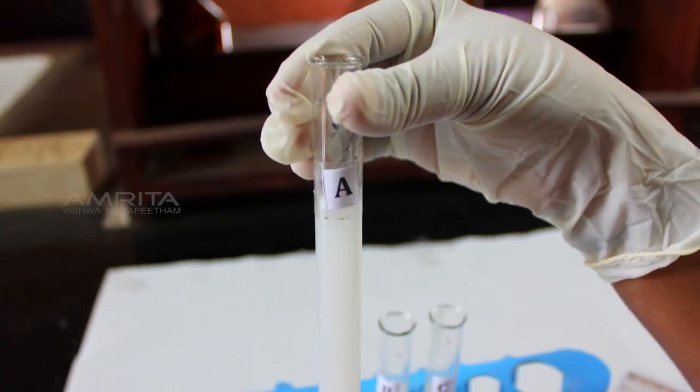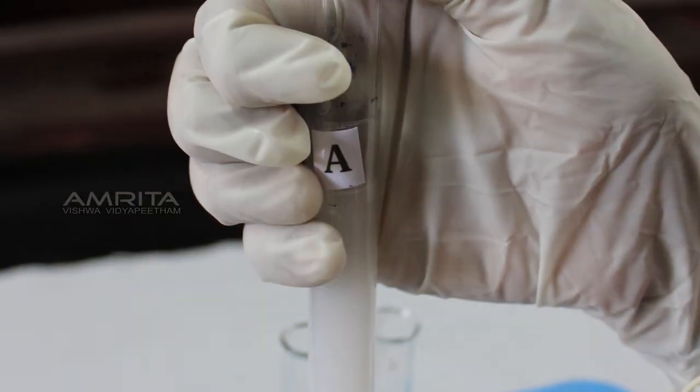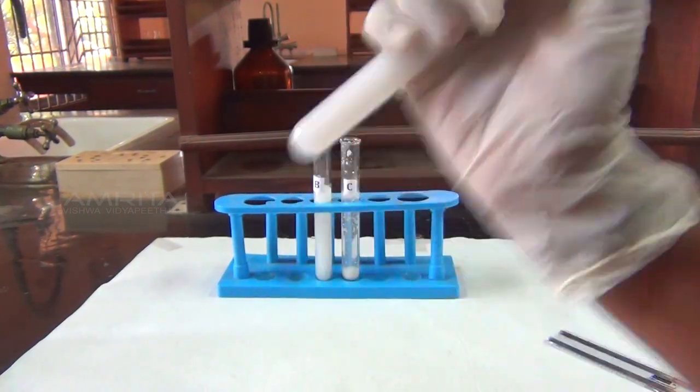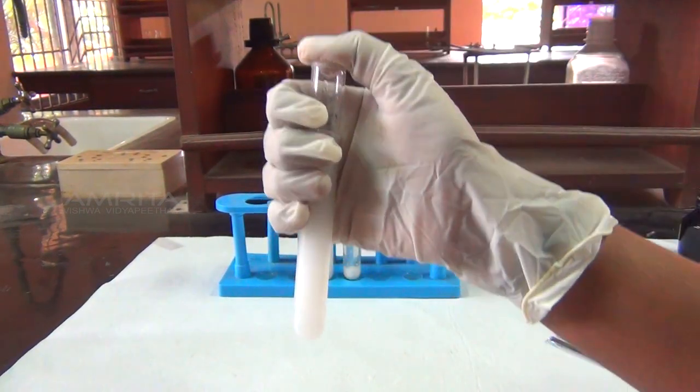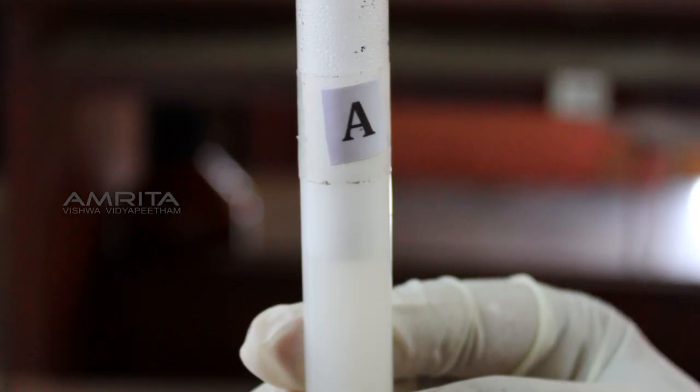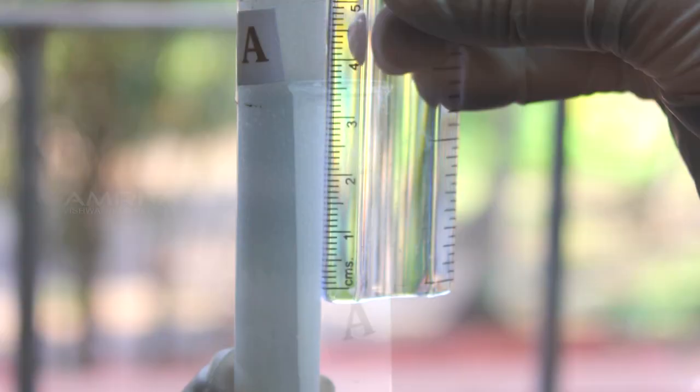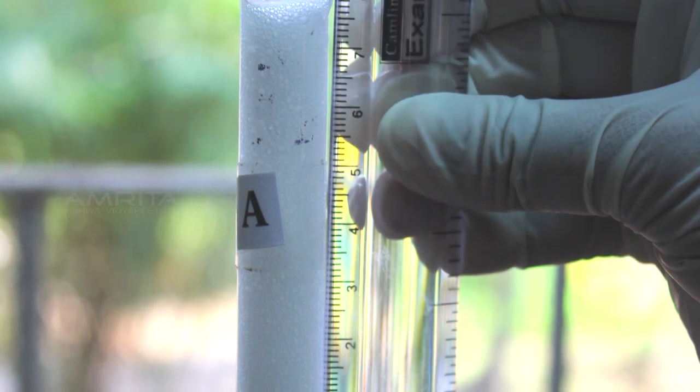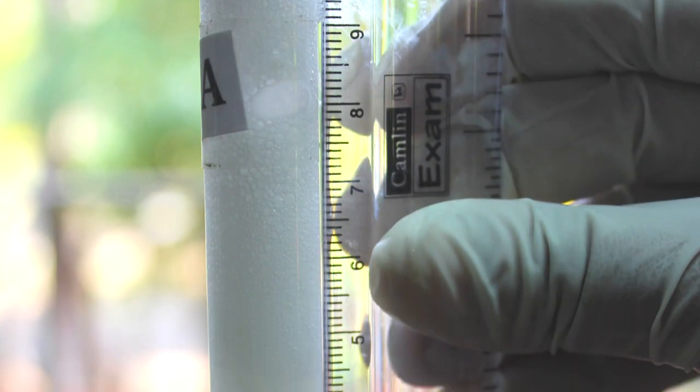Hold test tube A by hand, closing its mouth with the thumb. Shake it thoroughly 10 times upwards and downwards. You will notice that lather or foam has formed in the test tube. Measure the length of the foam and the final length of the soap solution using the measuring scale.